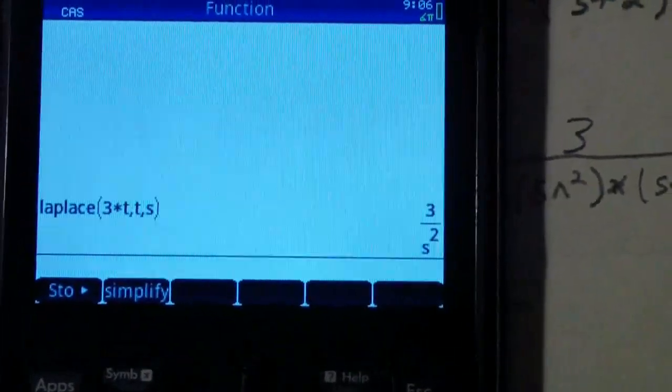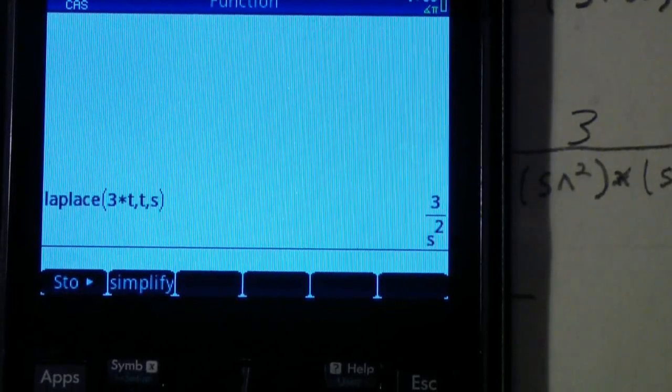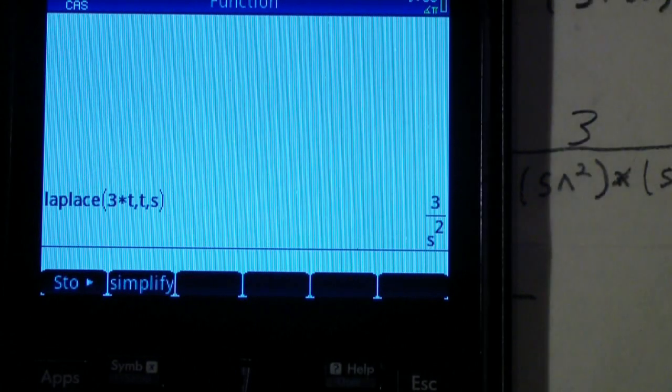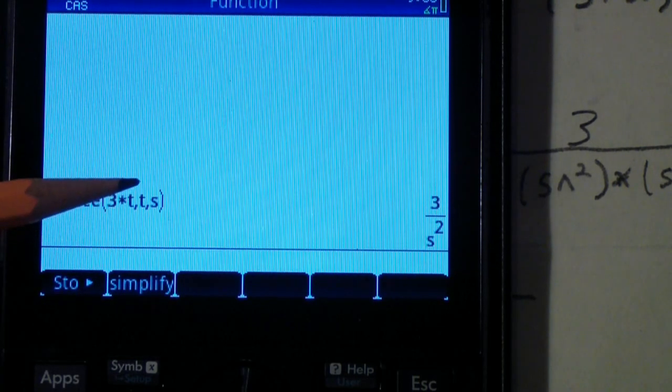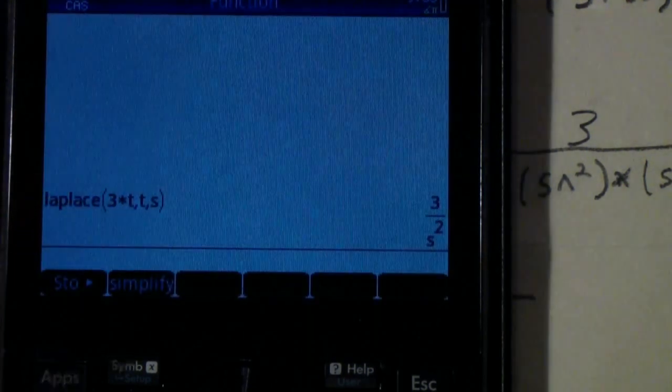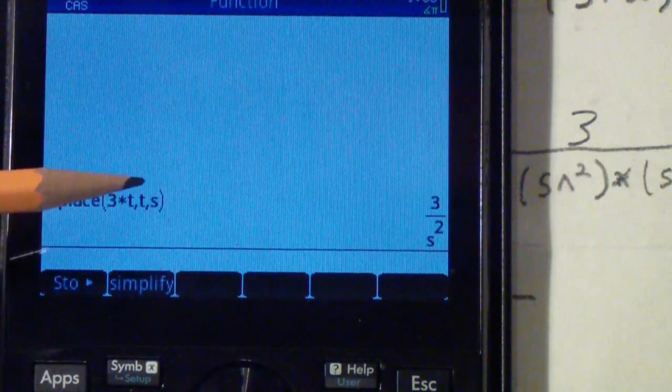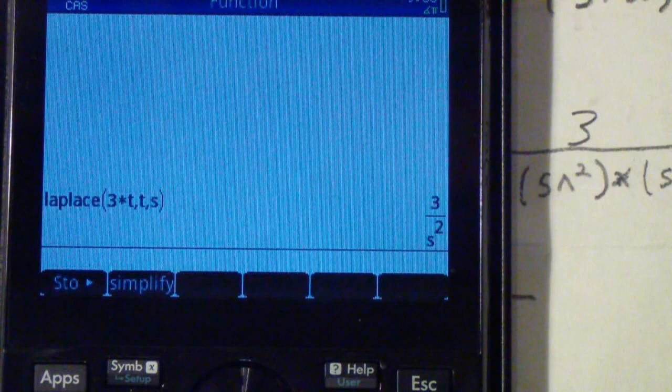So what is it that we're doing here? In essence, all we're doing is telling the HP calculator, just as we did with the CASIO, explicitly what the variables are. In other words, the t in the time domain and the s in the frequency or Laplace domain.